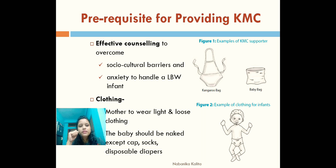The next important prerequisite is clothing. The mother should wear very light, loose clothing and a front-open gown is preferable. For the baby, they will mostly be naked except for a cap, socks, and diapers. Disposable diapers are used because if the baby passes stool or urine without a diaper, the baby may feel cold and KMC will be disrupted every time the nappy is changed. It is better to use a disposable diaper and discard it when necessary.